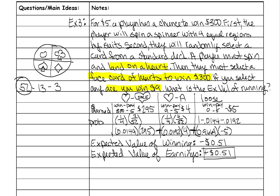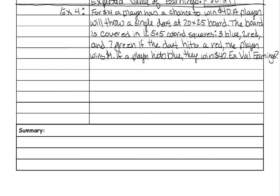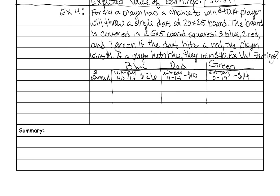Now I'm going to show you one more example. For $14, a player has a chance to win $40. A player will throw a single dart at a 20×25 board. The board is covered in 12 5×5 colored squares — three are blue, three are red, and seven are green. If the dart hits red, the player wins $4. If a player hits blue, they win $40. What is the expected value of the earnings?